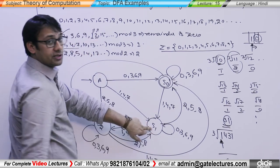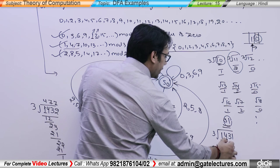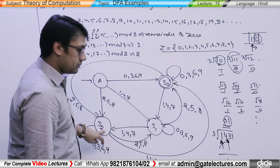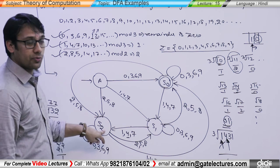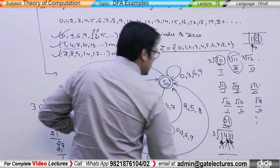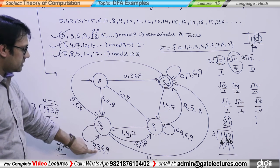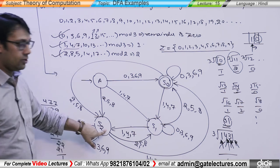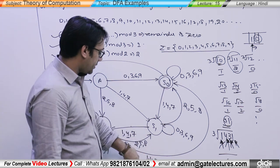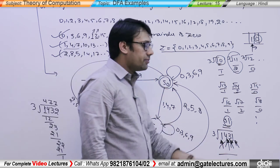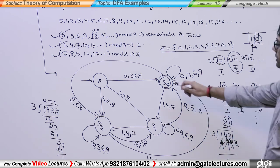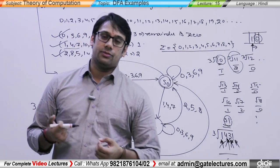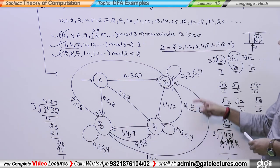We have a transition from state S0 to state S1 on input 4. We have state S1 to state S2. Because from state S1 on input 4, we go to state S2. Then on input 3, we stay or transition accordingly. On input 1, we go back to state S0. This state represents remainder 0. This is the DFA for numbers which are divisible by 3, and in this case we are taking decimal numbers.